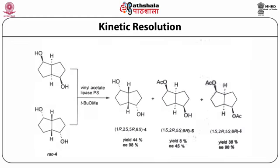Diols constitute important building blocks during organic synthesis. Lipases have been used to obtain various kinds of chirally pure diols using vinyl acetate as acyl donor. The monoacetate was formed initially followed by formation of the diol. Chirally pure diol was obtained with a yield of 44% and 95% enantiomeric excess.